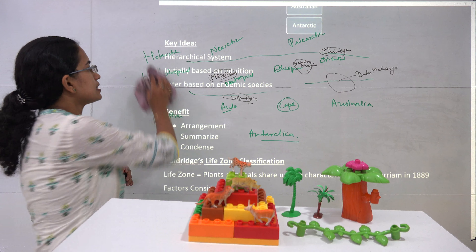Initially the system was hierarchical, based on intuition and later on based on endemic species. Endemic species are those species which are native to a specific area. Now how do we find resemblance between animals or classify them as nearctic, holarctic, and so on? This seems like a tricky question to answer. However, it is answered based on the concept of resemblance. Resemblance is the key idea to understand how we classify plants or animals under different heads.